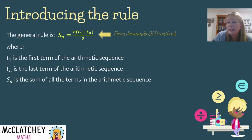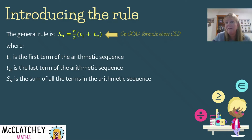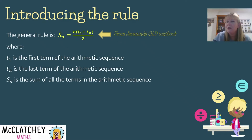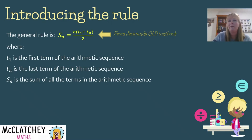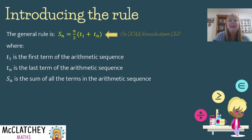If you're in Queensland using the Jacaranda textbook, the rule looks slightly different from what's on the QCAA formula sheet. The only difference is that n is on the top, multiplied by everything in the brackets and then divided by 2 — it's really the same as finding half of the number of terms in the series, just expressed a little differently. They're virtually the same rule.